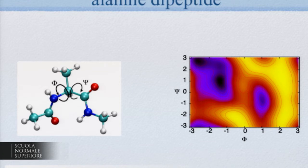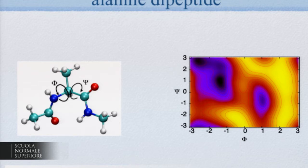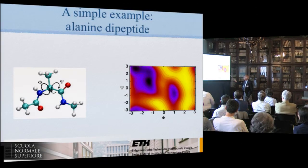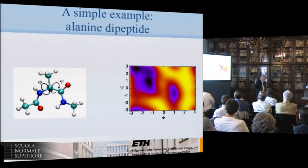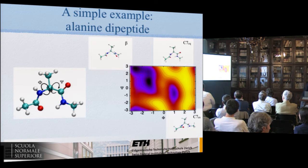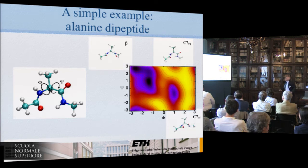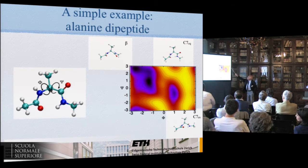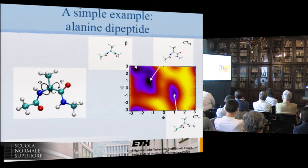We can represent the free energy as a function of the Ramachandran angles. You see there are minima and also transition pathways between one minimum and the other. The various minima correspond to different possible metastable conformers of this protein, and they have been studied and labeled accordingly. That's the language.